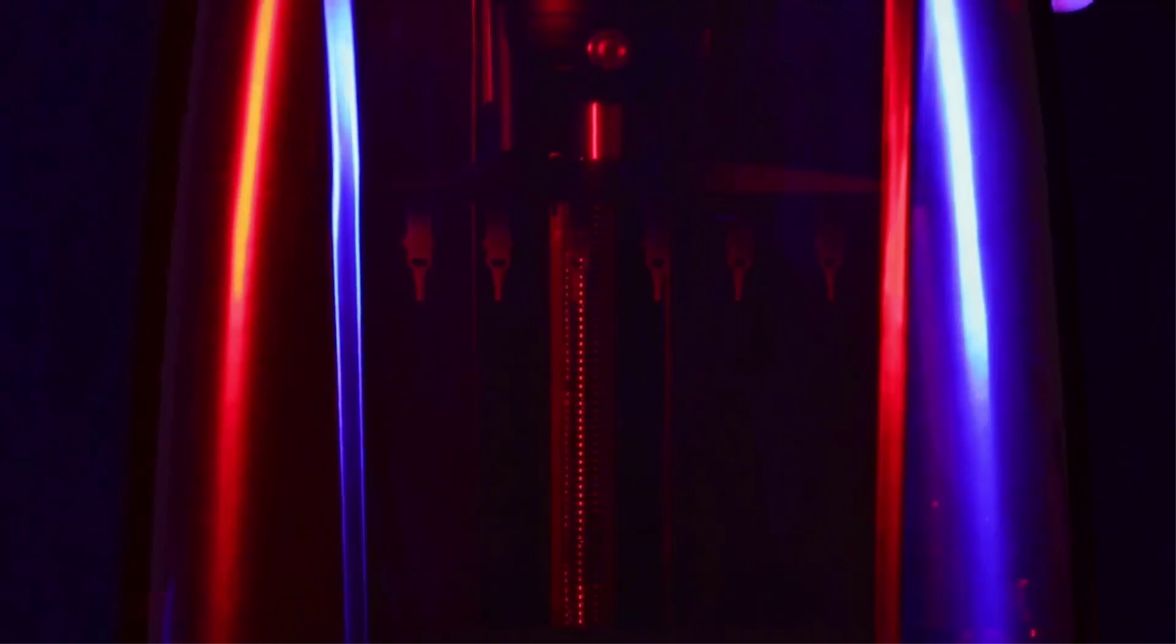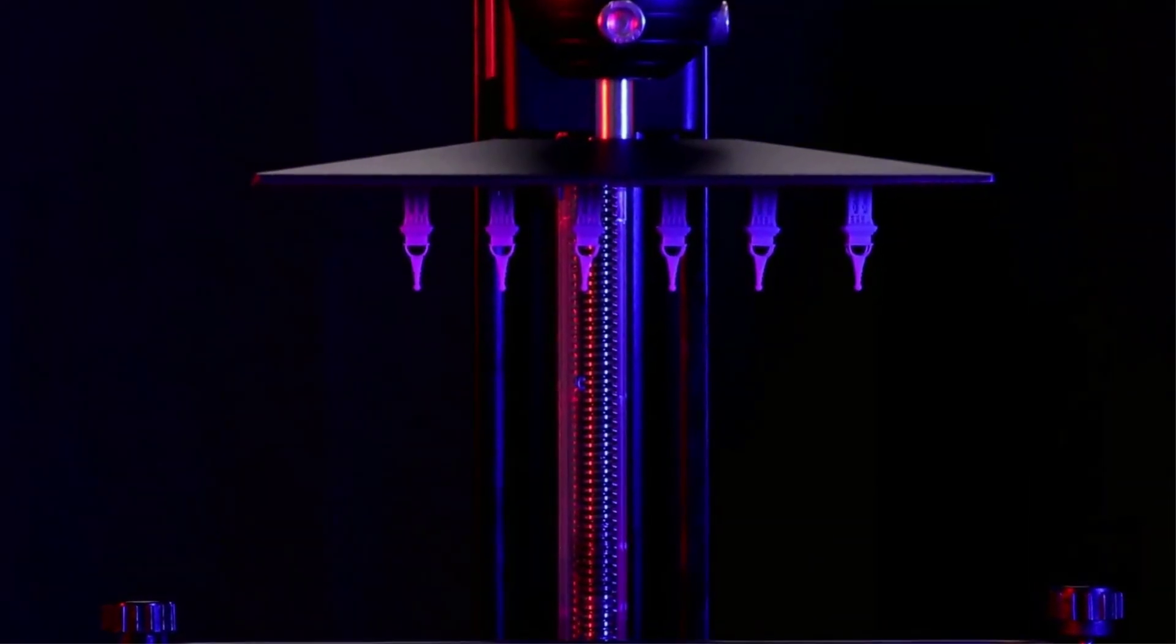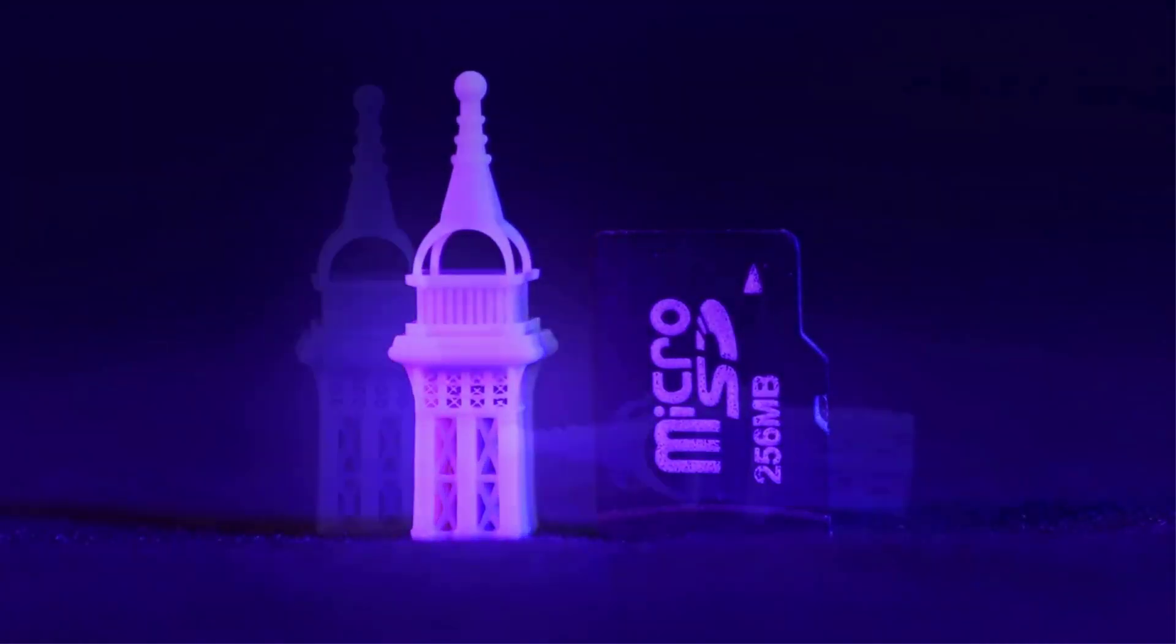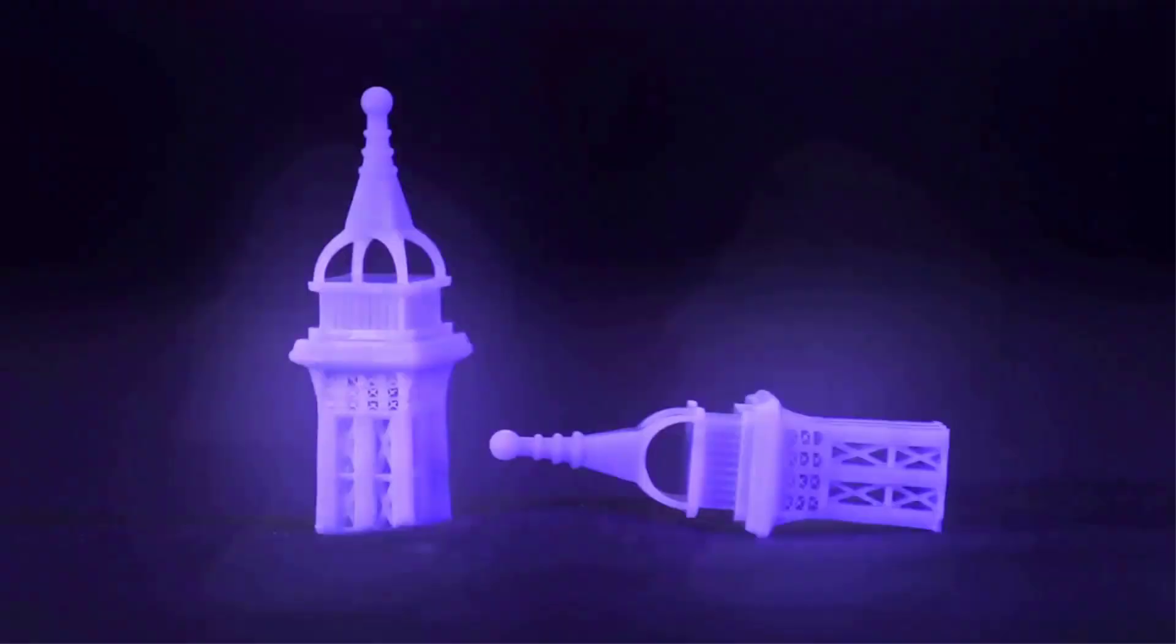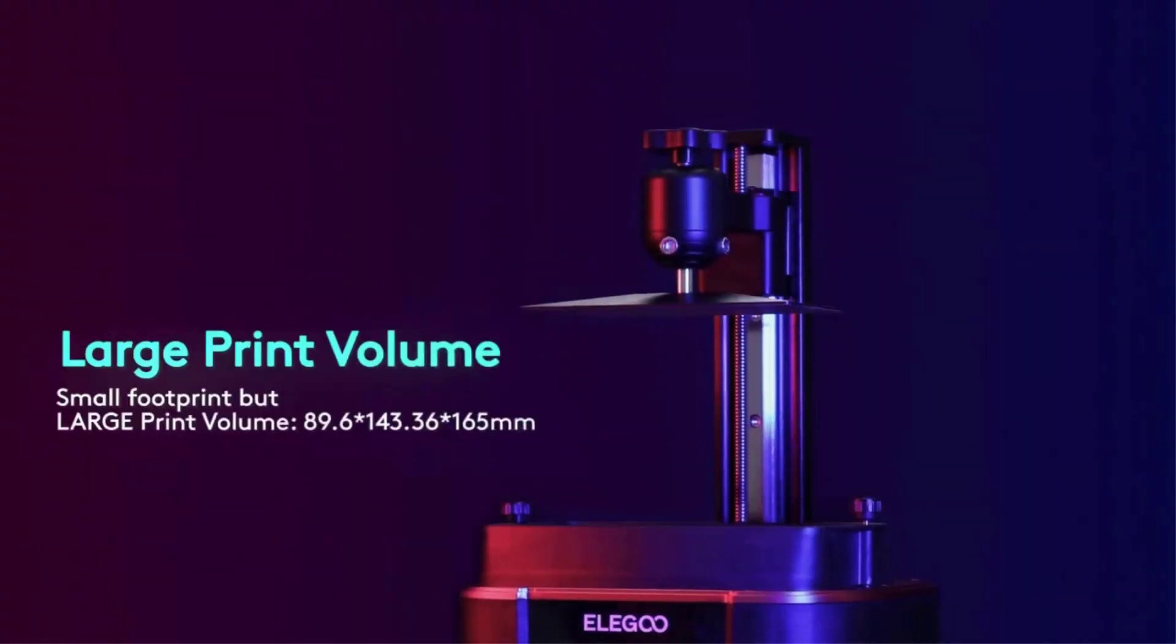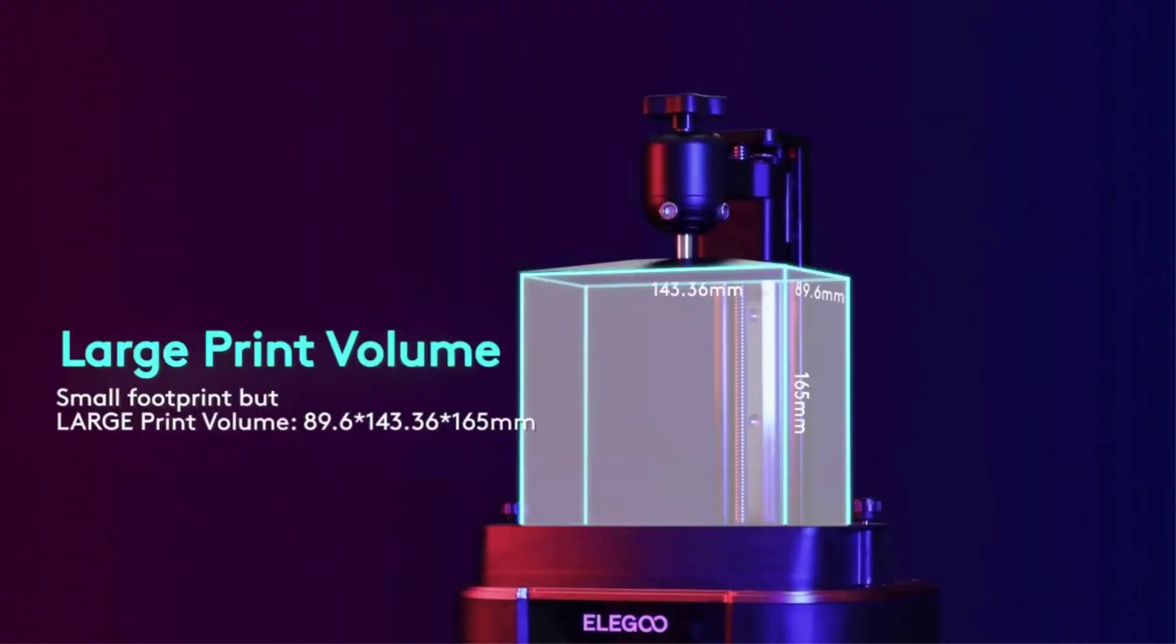The UV light source and the FEP film are upgraded as well, to be more durable and improve performance over the earlier versions. Included is a bundled 1-year subscription to Chitubox Pro Slicer, giving you extra features on the software side of things.